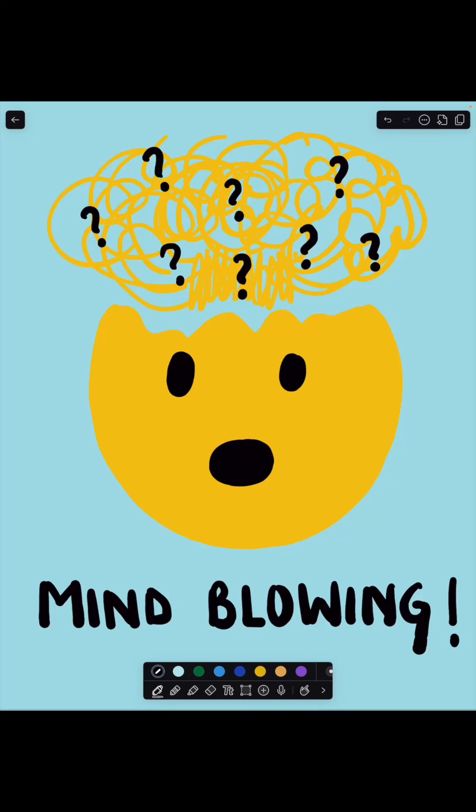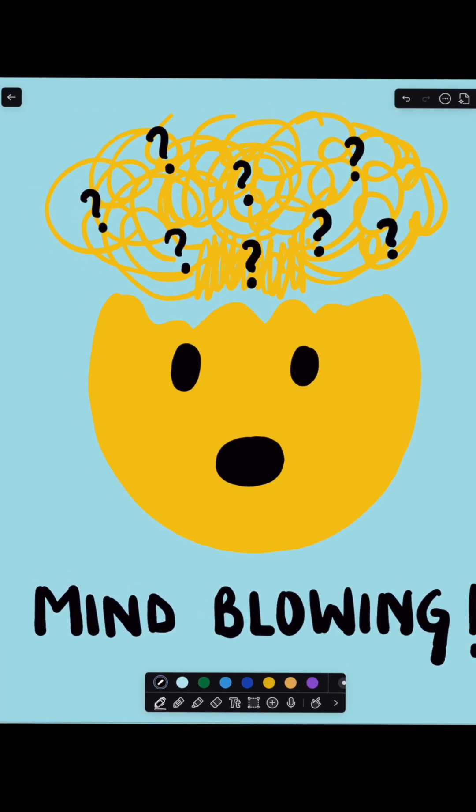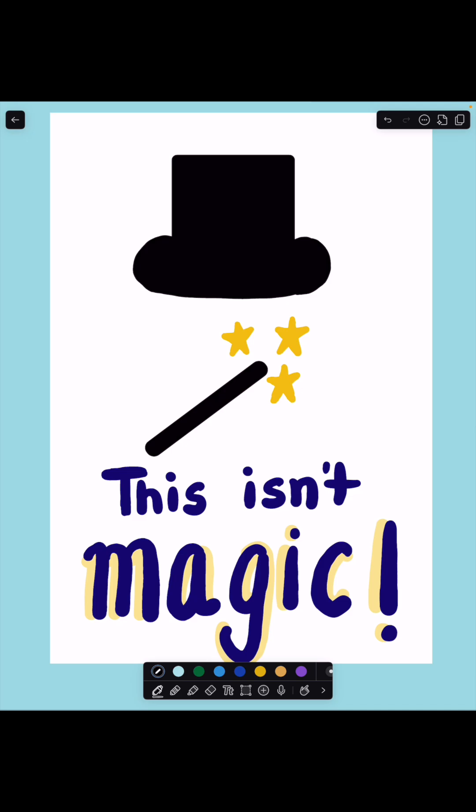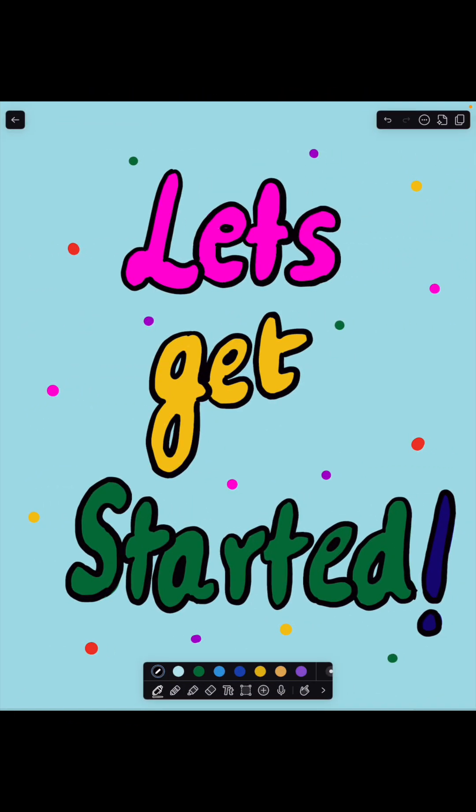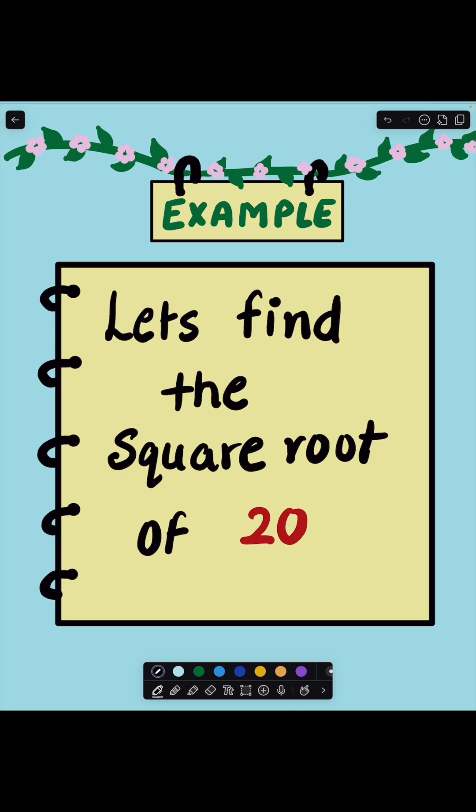I'm about to blow your mind in 30 seconds. Pick any number and I'll find its square root faster than you can open your calculator app. This isn't magic, it's a secret technique older than the pyramids and I'm about to teach it to you right now. Let's get started.